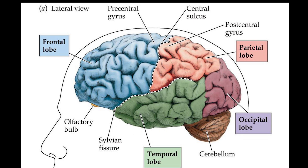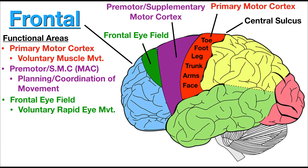There are four principal gyri in the frontal lobe. The precentral gyrus is directly anterior to the central sulcus, running parallel to it, and contains the primary motor cortex, which controls voluntary movements of specific body parts. Three horizontally arranged subsections of the frontal gyrus are the superior frontal gyrus, the middle frontal gyrus, and the inferior frontal gyrus.